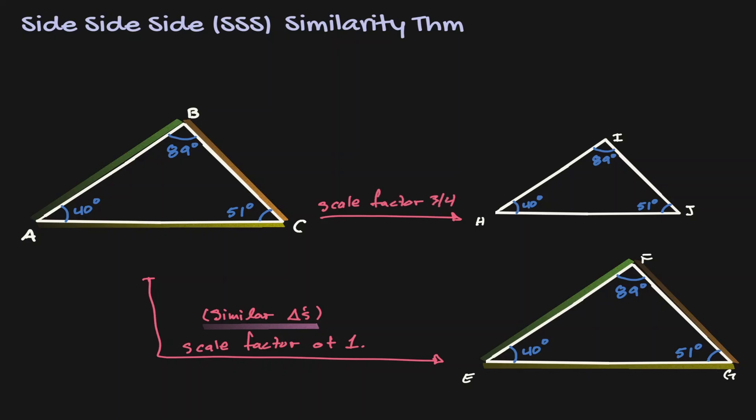Notice that when we shrink this triangle, the measurement of the interior angles did not change. And because we multiplied by a scale factor, all the sides of these triangles remain in proportion. AB is still proportional to HI by 3 fourths, AC is proportional to HJ by 3 fourths, and BC is proportional to IJ by 3 fourths. Therefore, we can claim that these two triangles are still similar.